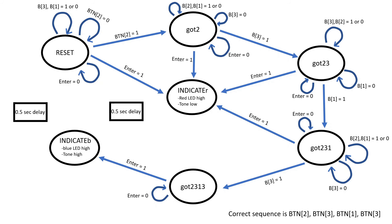After the half-second or one-second delays, we go back to the reset state and start the cycle over again. That's the state machine — you can pause and take a screenshot. It's a Moore machine because the outputs only depend on the current state.